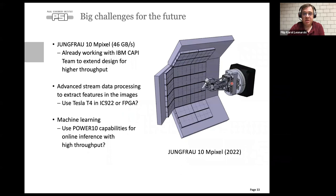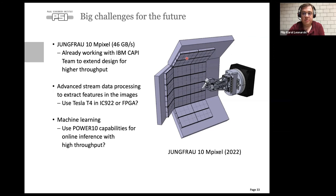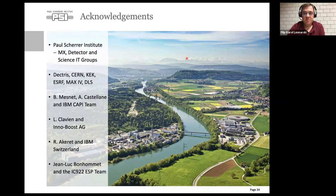We have some challenges ahead. We have a detector with tilted panels at 10 megapixels, which will be 46 gigabytes per second to deal with. We're already working with the IBM OpenCAPI team to extend the design for higher throughput. We are also looking to do some feature extraction on the fly — finding the positions of spots — using either GPUs or free space in the FPGA. We're also looking at machine learning and high-speed inference, and look forward to Power10 online inference capabilities.